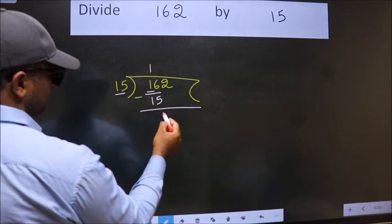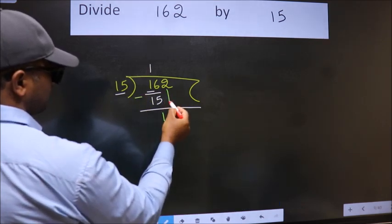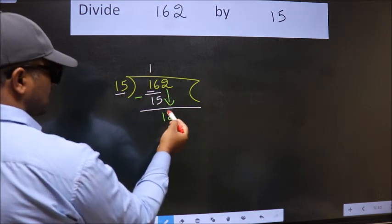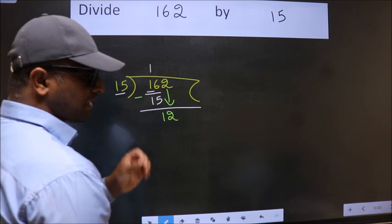We get 1. After this, bring down the beside number, so 2 down. After this step, the mistake happens.